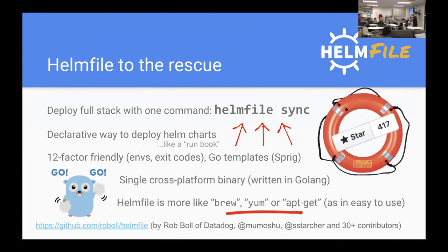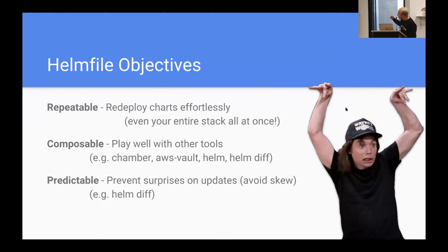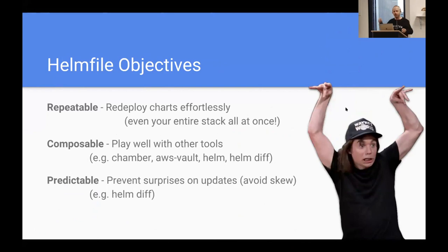The Helmfile configuration file is itself just a Go template, so you can parameterize it and use any function in the sprig library to customize that template. What we've achieved with Helmfile is a brew-like experience. Every time we deploy our charts to Kubernetes, we want it to redeploy consistently and predictably. Like a lot of good tools in the ecosystem, we want it to be composable — usable together with Chamber, AWS Vault, and our CI/CD pipeline — and this checks off all of those boxes.